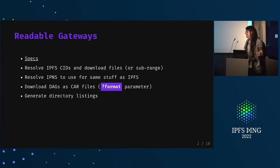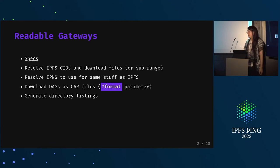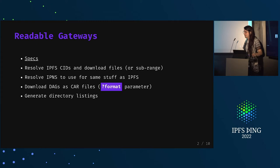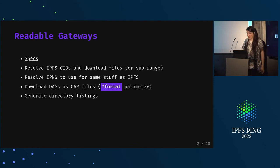Recently, downloading CAR files — which are entire blocks of data — is very popular. We've also got directory listing, which I think should be a bit more controversial, but that's probably a whole other thing. And we get all of this for free in Go, which is nice.